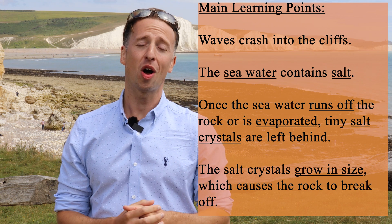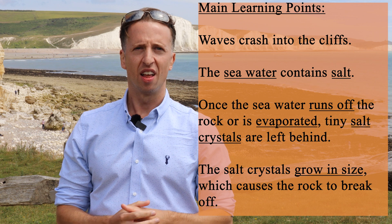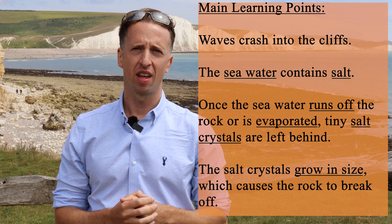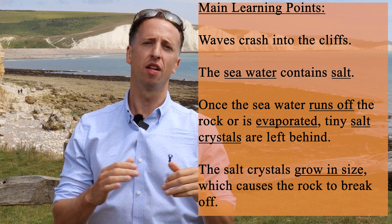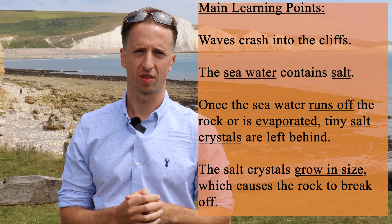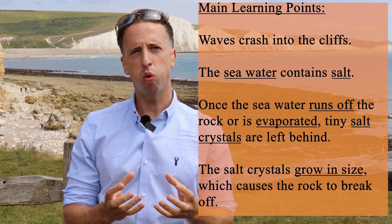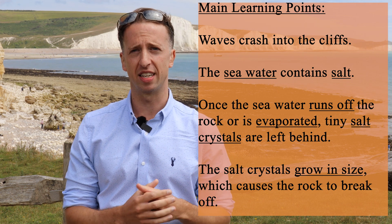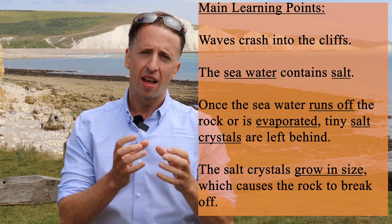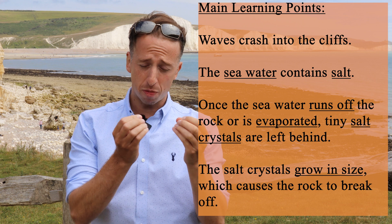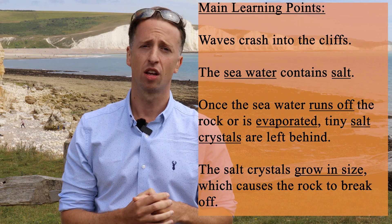The second type of physical weathering is salt weathering. This is when waves crash into the cliffs and some water gets into the cracks along the cliff face. The sea water contains salt, and once this water runs off the rock or is evaporated, tiny salt crystals are left behind. As these salt crystals expand in size, it causes the rock to flake away.